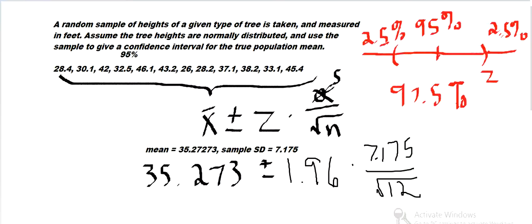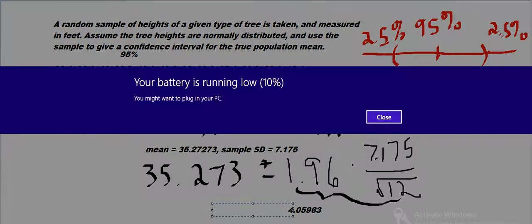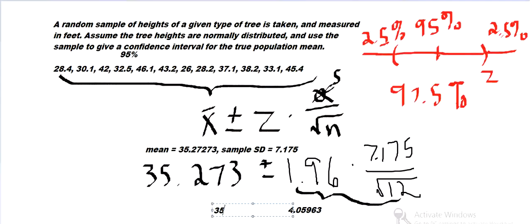For the second part, I'm getting 4.05 for that. Or 4.06. So we're going to do 35.273 plus or minus 4.05. So we add that and subtract that. And that will give the two endpoints of the confidence interval.